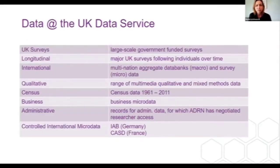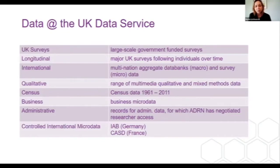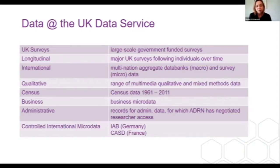The kind of data we hold at the UK Data Service are mainly UK surveys — large scale government-funded surveys — longitudinal data such as the major birth cohort studies at the CLS or Understanding Society data. We have international macro and micro data, qualitative data including a range of multimedia and mixed methods data, census data, business micro data, administrative data. We are also making international controlled data available via our secure lab, including secure data from Germany from the IAB Institute for Employment Research in Nuremberg, and also from France from the CASD.